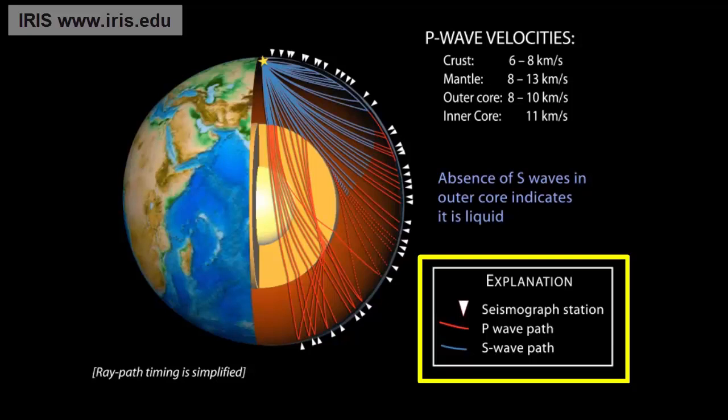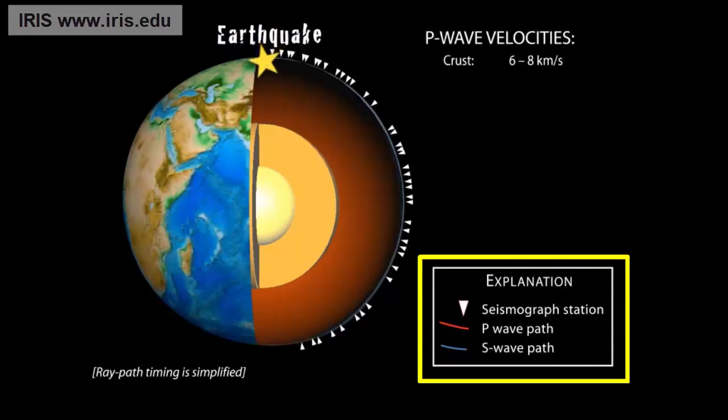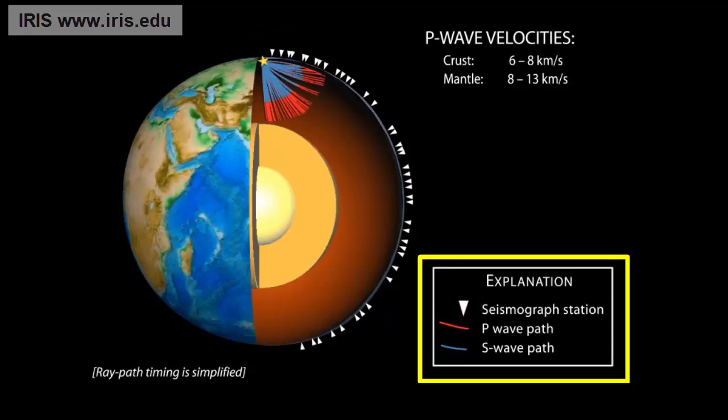Body waves that travel downwards will travel deeper into the Earth, slowing or speeding up as they move from one layer into another, and eventually coming back to the surface to be felt and recorded on a seismograph. The time it takes for those waves to travel through the Earth tells us about the layers through which they've traveled.